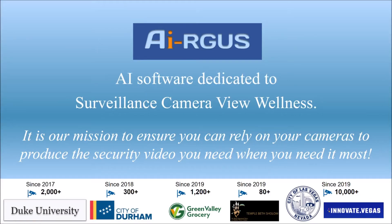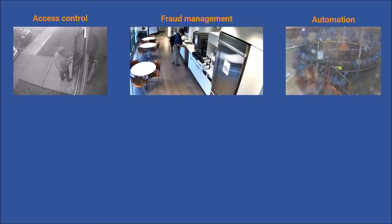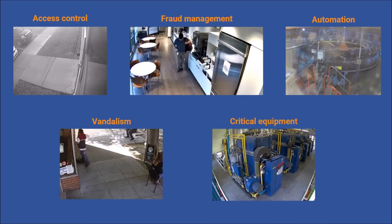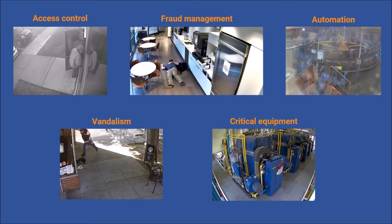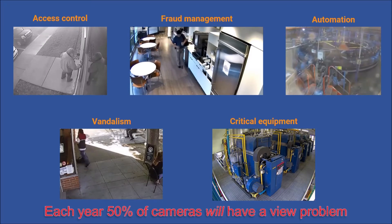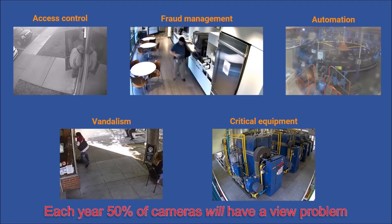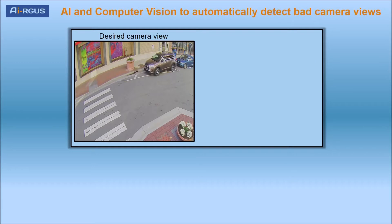You purchase surveillance cameras to empower you with additional eyes. You depend on their view for many reasons, including access control, fraud management, security, and having evidence when the worst happens. But what if the view goes bad? Each year, 50% of cameras will have a view problem. In today's security climate, is this a risk you can afford?